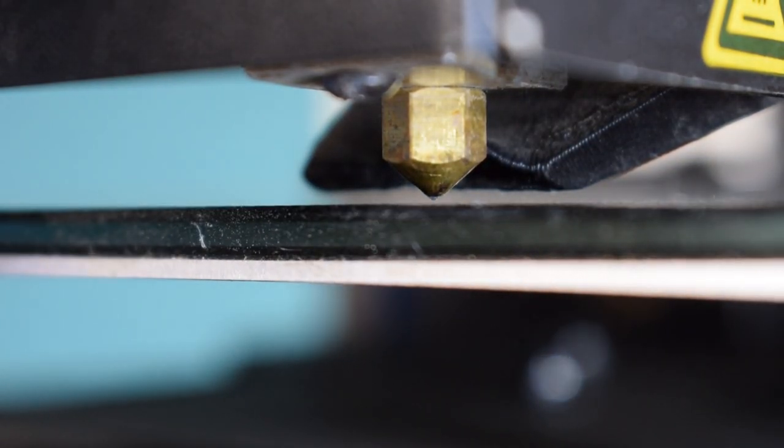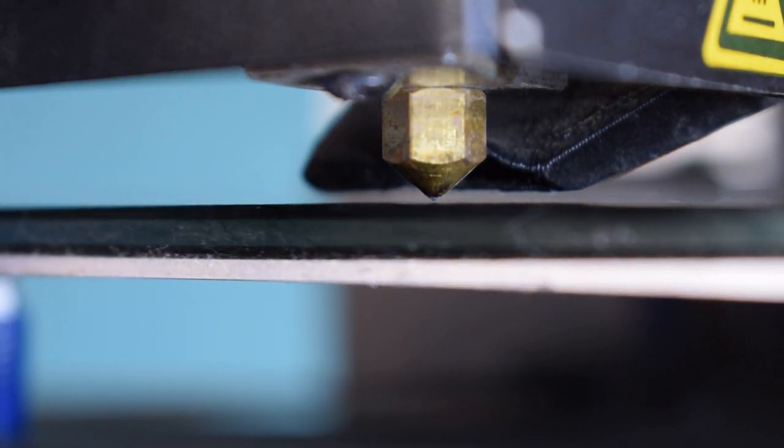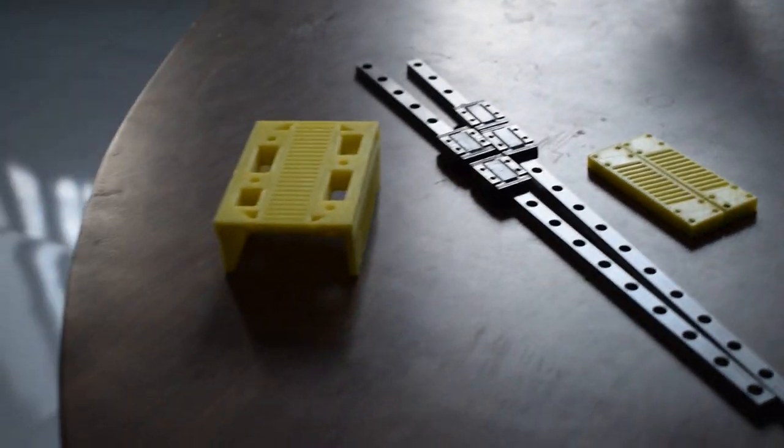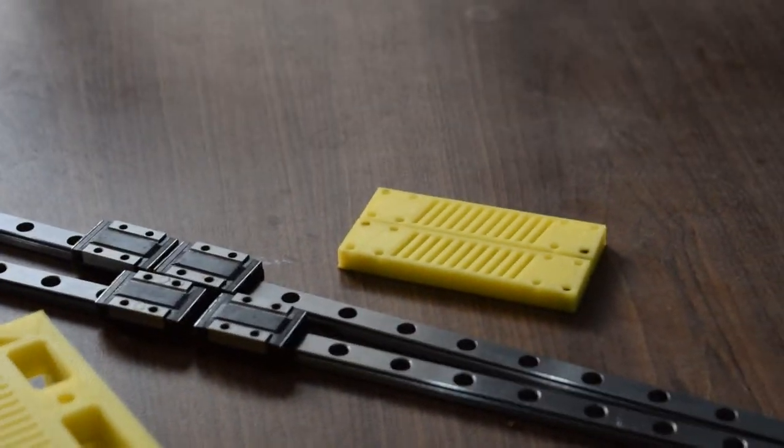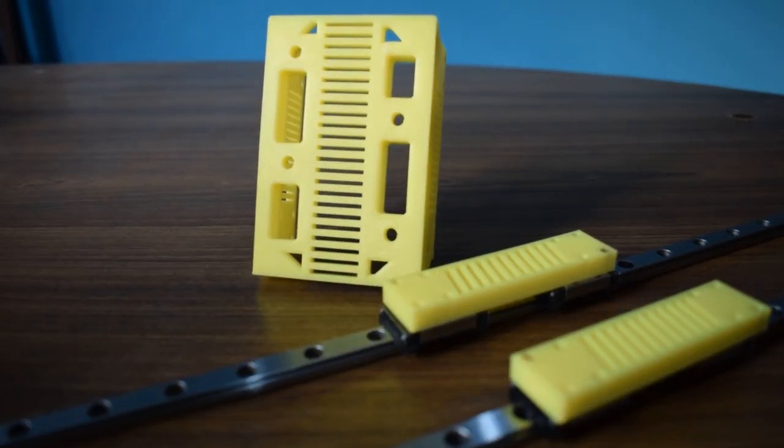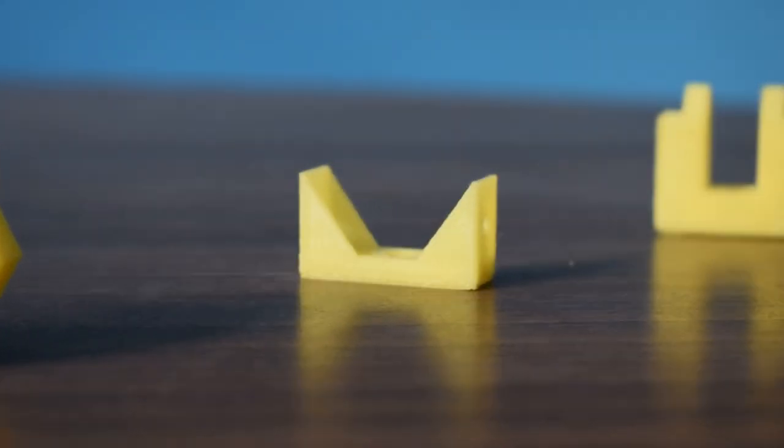My Y-axis roller bearings had a wiggle in them which was causing quality issues and it was really difficult to level the bed properly. So I decided to replace the roller bearings with these linear guides for which I designed this bed contraption and a belt tightening mechanism.